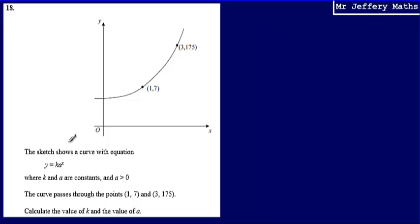This is question 18. Here we're told that the sketch shows a curve with equation y equals k multiplied by a to the power of x, where k and a are constants and a is greater than 0. We're then told that the curve passes through the points (1, 7) and (3, 175), and we're asked to calculate the value of k and the value of a.